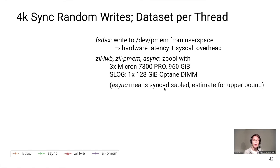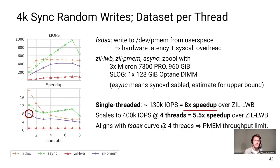The zilawb and zilpmem use their respective ZIL kinds. The async configuration has sync=disabled, representing an estimate for the upper bound of what we could achieve if ZIL persistence code were maximally efficient. Results: zilpmem achieves 130,000 IOPS with a single thread — about an 8x speedup over zilawb — and that's just a software change. It scales up fairly well to 400,000 IOPS with four threads, still a 5.5x speedup over zilawb.